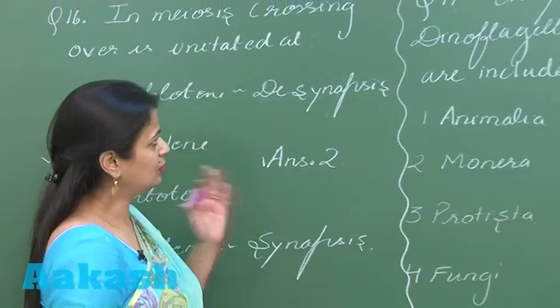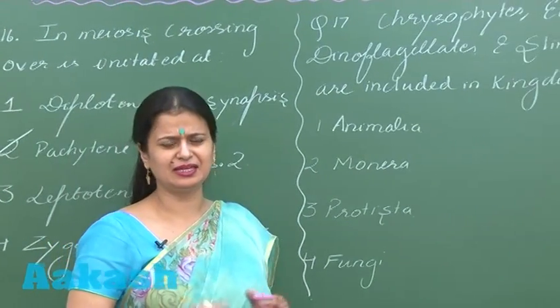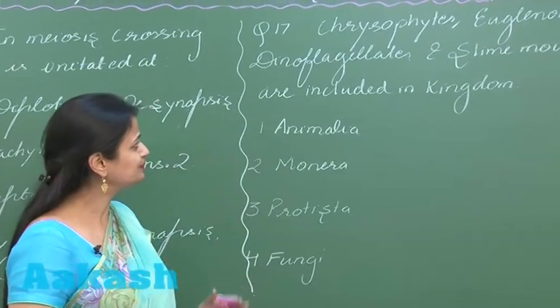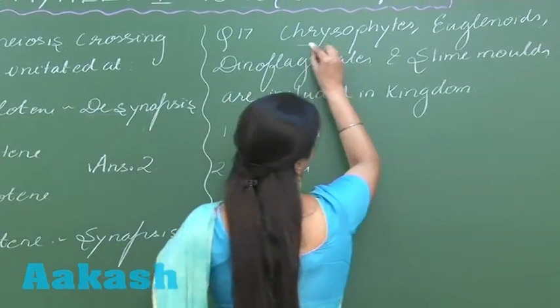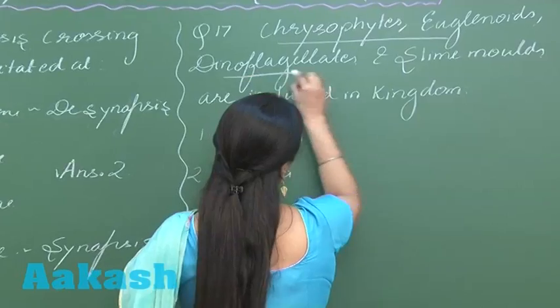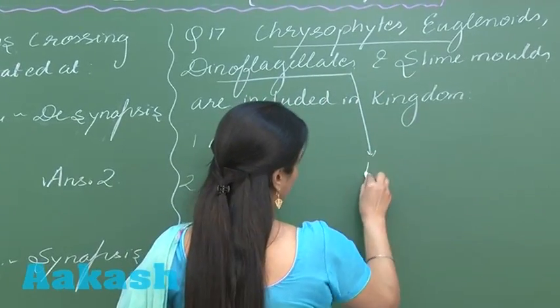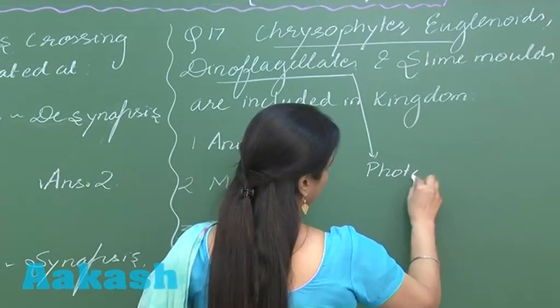Now coming to question number 17. Again, it's a very easy question. These chrysophytes, euglenoids, dinoflagellates - they all are photosynthetic protists.